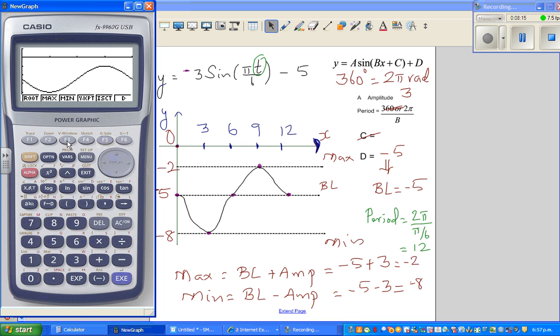So you go g-solve, maximum. That's after 9 minutes, your y-value is negative 2. Again, g-solve, minimum. After 3 minutes, you have the minimum of minus 8.